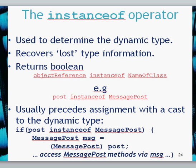For example, looking at the message post and post classes at the bottom: if the post — which is the variable name — is an instance of MessagePost, which is a type, then we can do our casting. We'll know that if that post is actually a message post, we can do message post things to it as opposed to post things to it.